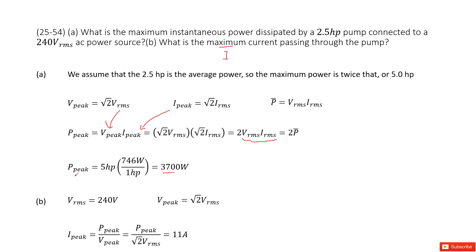The peak power was found in part A. Now we need the peak voltage, which equals square root of 2 times the RMS voltage. Inputting all the given quantities, we get the final answer.